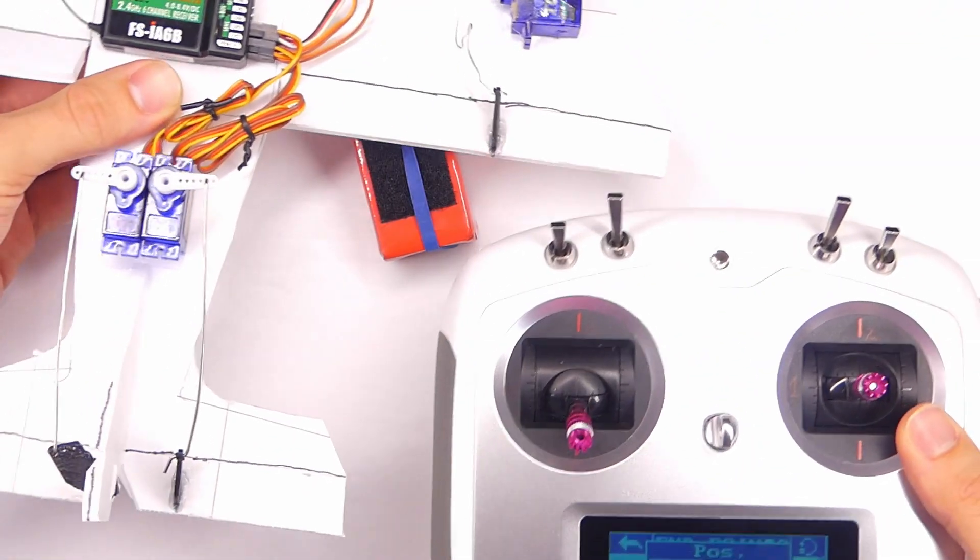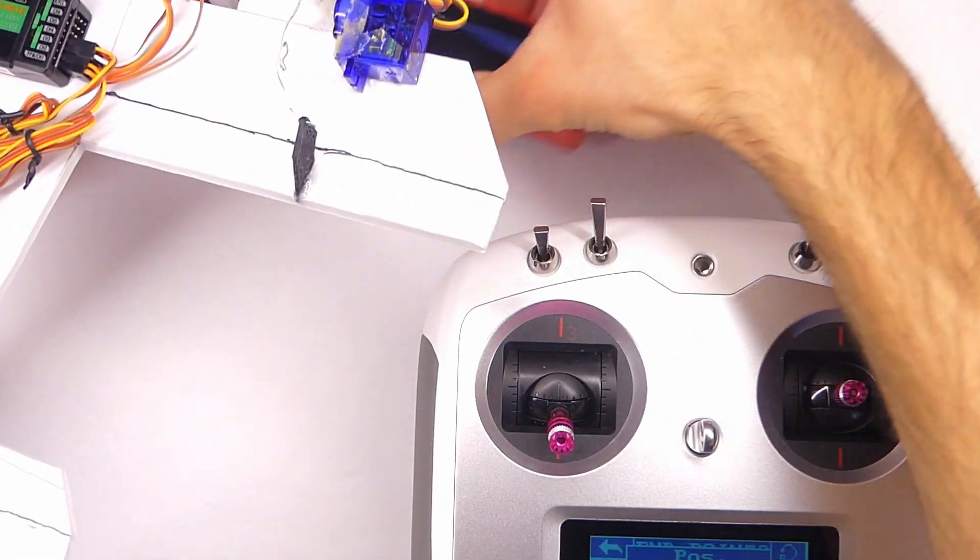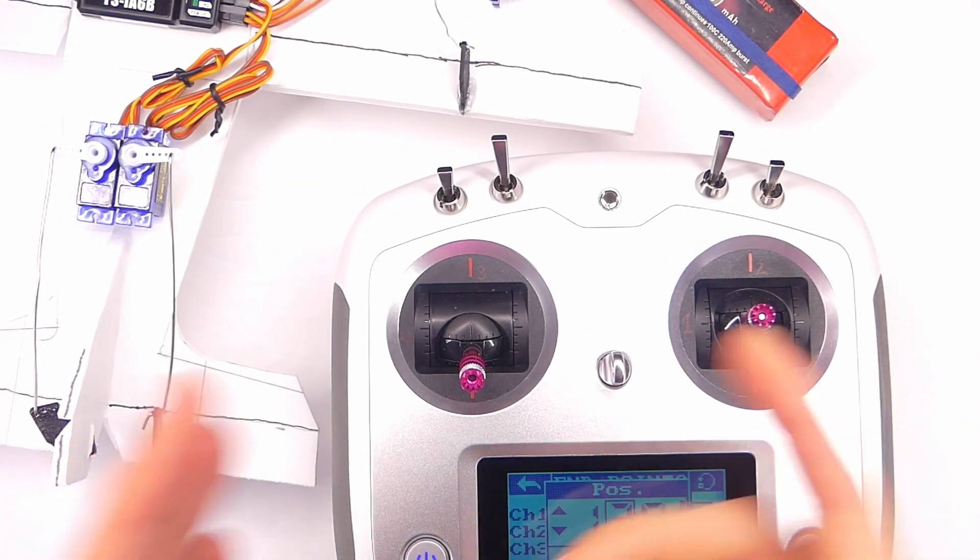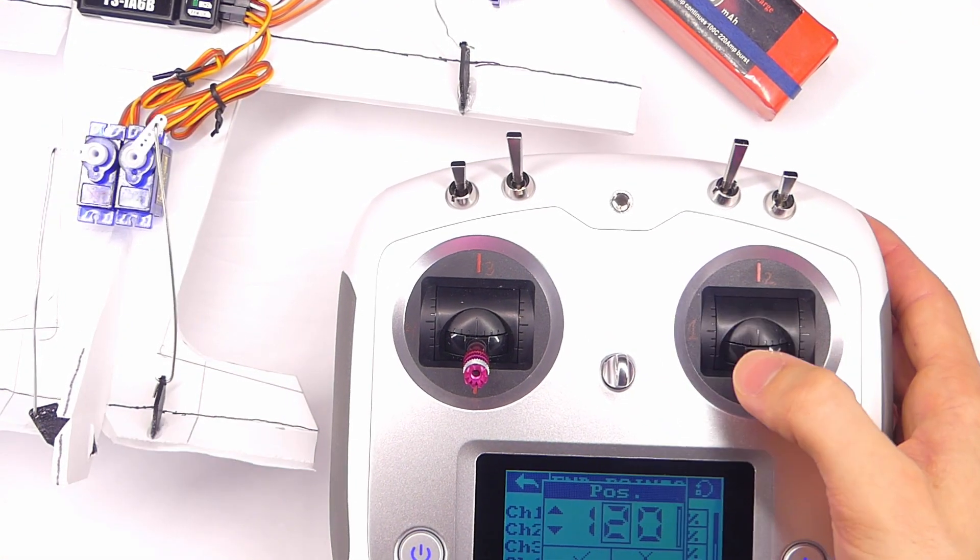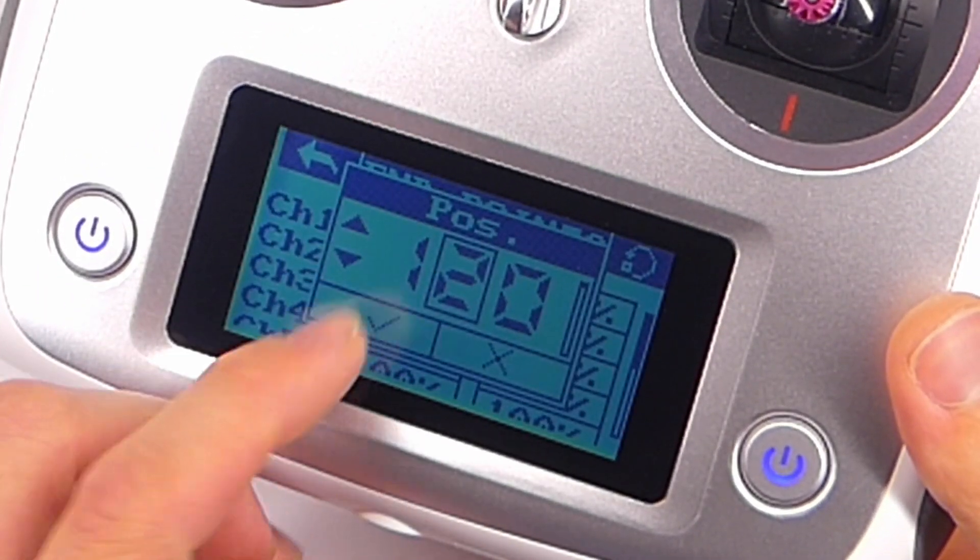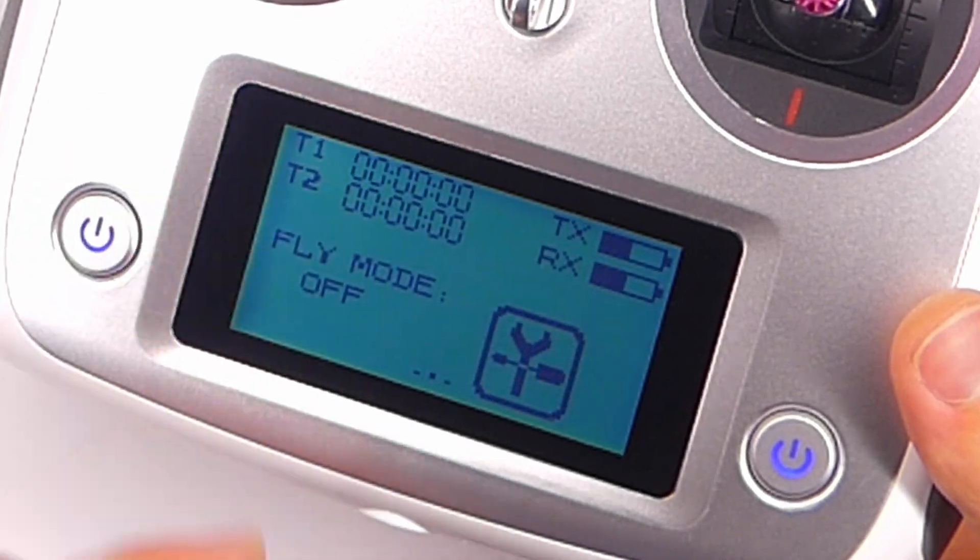So we could actually increase it by 20%. So it barely goes down and it goes way up. So that would be just an example there of how you could increase or decrease your throws, specifically one way or the other for any given servo. And then once you have them how you want it, just press the check mark and you can back out of that and go to the main menu.